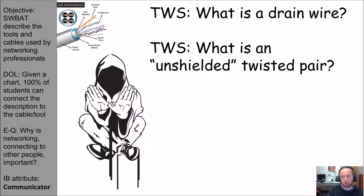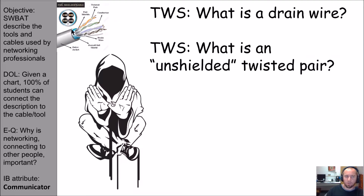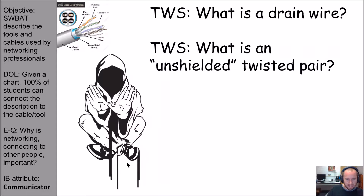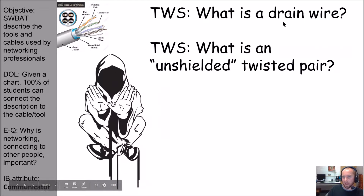What is a drain wire? And what is an unshielded twisted pair cable? With electricity flowing through these wires, there's some magnetic activity going on that can create interference. By shielding the cable, you reduce that interference. The Wu-Tang guy hovering above the ground is my hint to the answer about what a drain wire is.